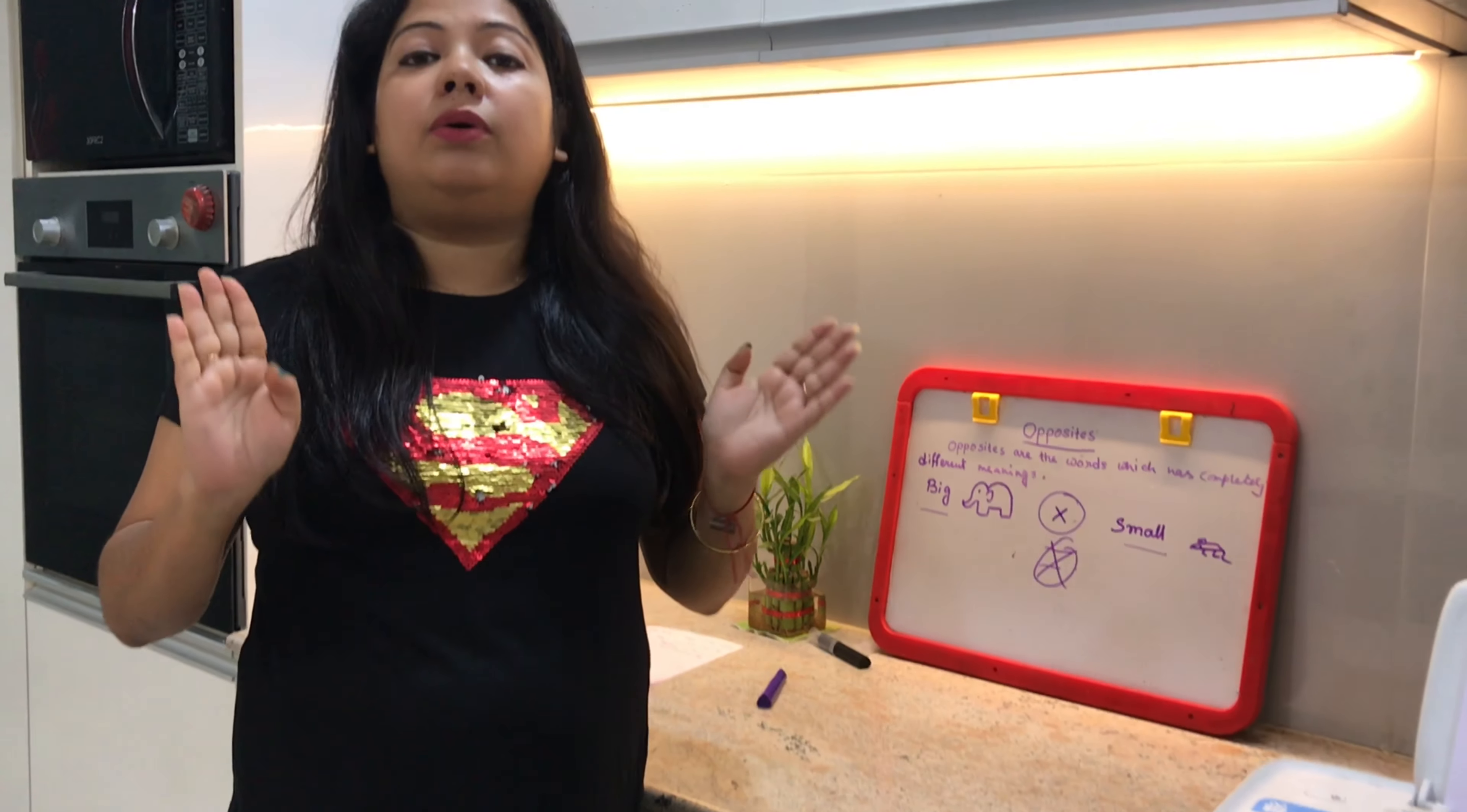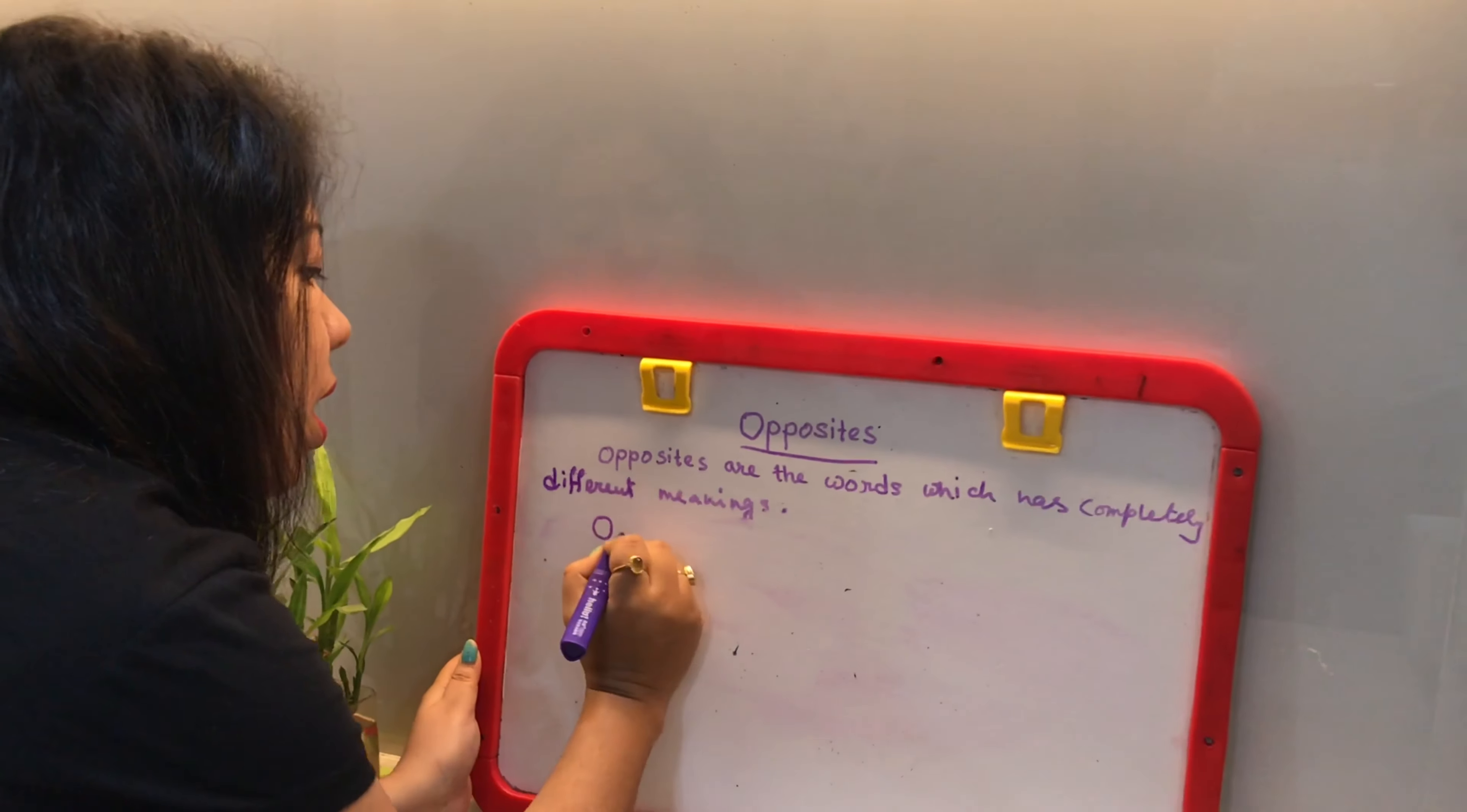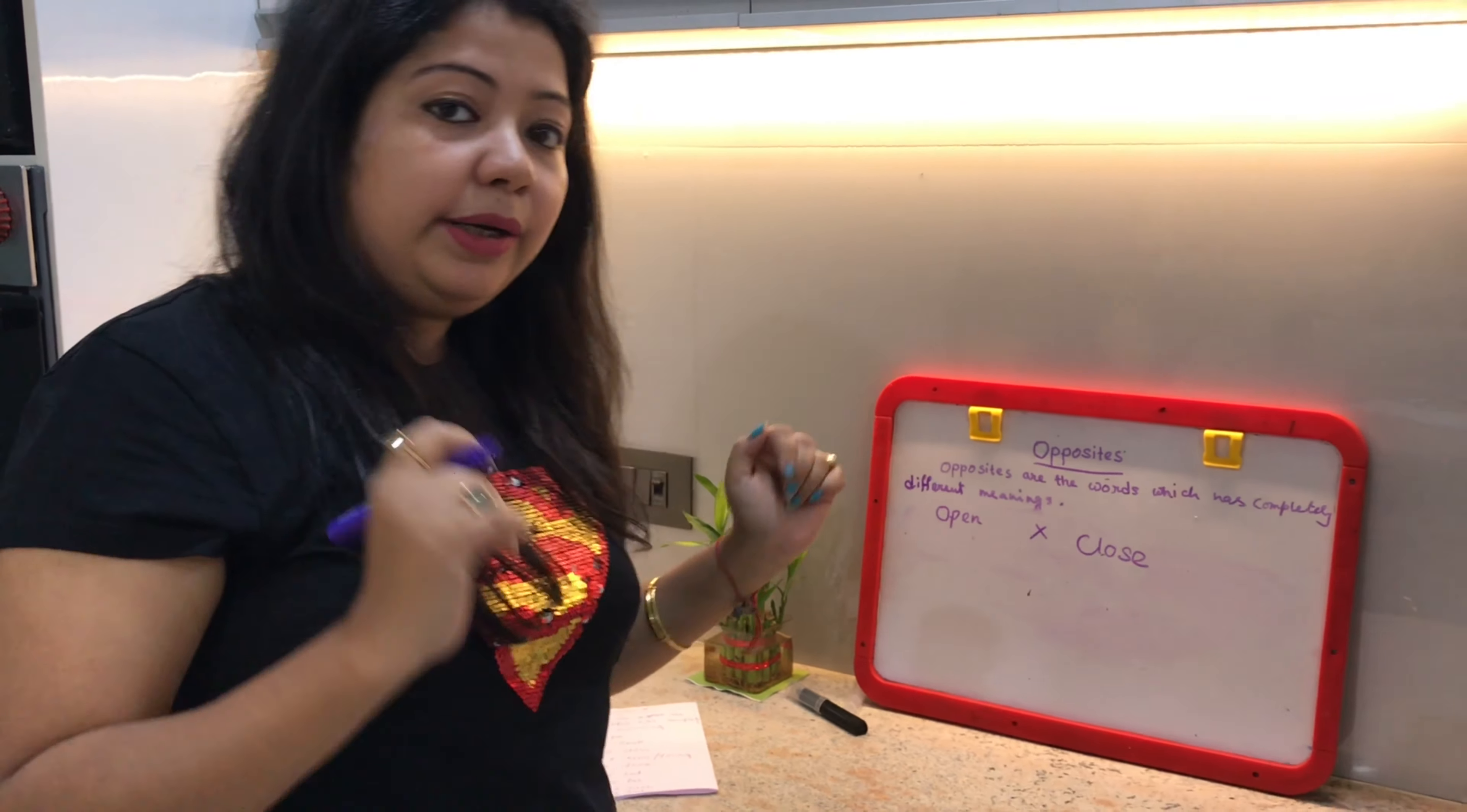They have completely different meanings. Open - opposite is close. Open means khula, close means band. They have completely different meanings. Next is old - opposite is new or young.